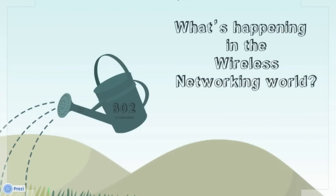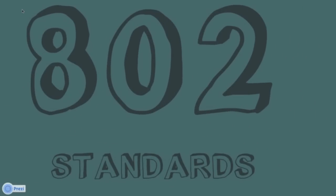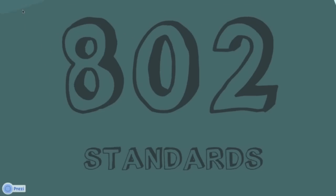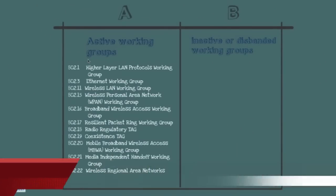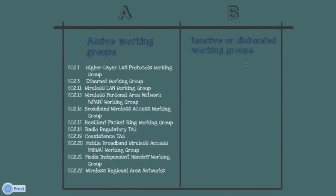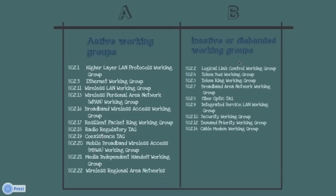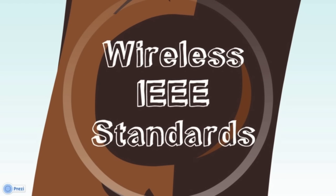The thing which most concerns an HTC engineer is the wireless world. So let us speak and get some answers to those questions — what is happening in the wireless internetworking world, and how does IEEE 802 standards contribute to it? IEEE standards are classified into two groups: active working group and inactive working group. Under active working group, 11 standards are defined. Under inactive working group, 9 standards are defined. Among these, we are going to deal with only wireless IEEE standards.